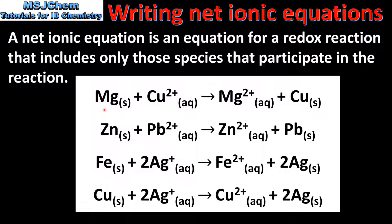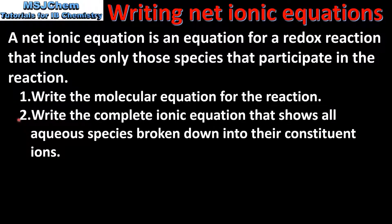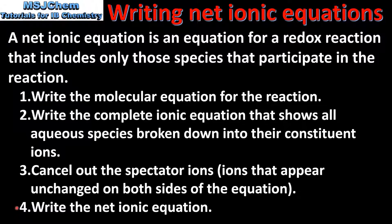Next we look at the stages involved in writing net ionic equations. The first step is to write the molecular equation for the reaction. The next step is to write the complete ionic equation that shows all aqueous species broken down into their constituent ions. The third step is to cancel out the spectator ions — that is the ions that appear unchanged on both sides of the equation. And the final step is to write the net ionic equation.